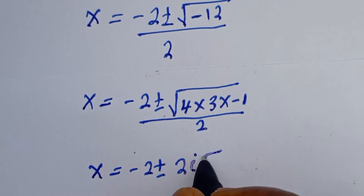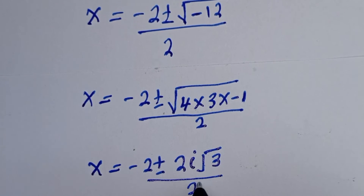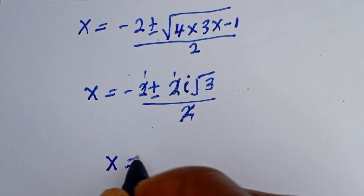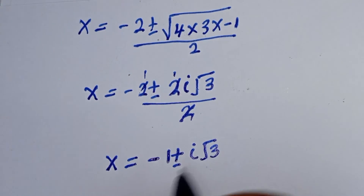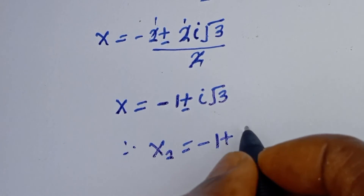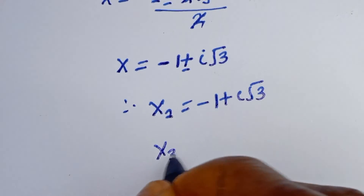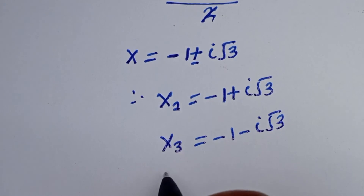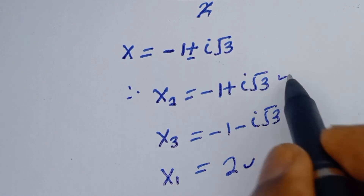s is equal to minus 2 plus or minus: the square root of 4 is 2, the square root of minus 1 is i, and the square root of 3 remains, all over 2. This gives s equal to minus 1 plus or minus i root 3. Therefore, s₂ is equal to minus 1 plus i√3, and s₃ is equal to minus 1 minus i√3. And we know that s₁ is equal to 2, the real solution, and we have the other two complex solutions.